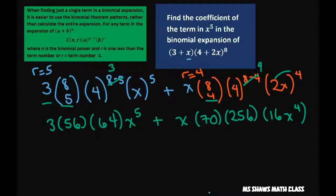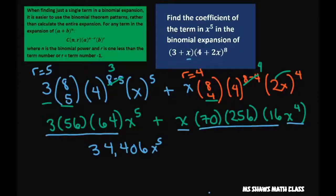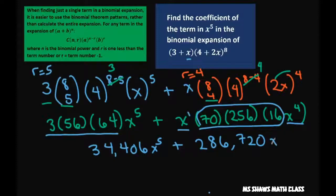Now cleaning this up further, you multiply those and you get 34,406 x to the fifth. These two right here is going to make that x to the fifth, so multiply those three numbers and you get 286,720 x to the fifth. And then you just combine like terms.